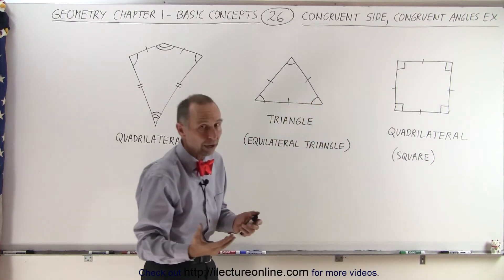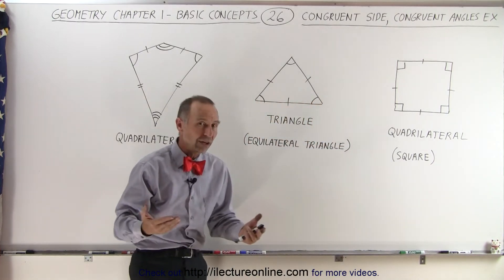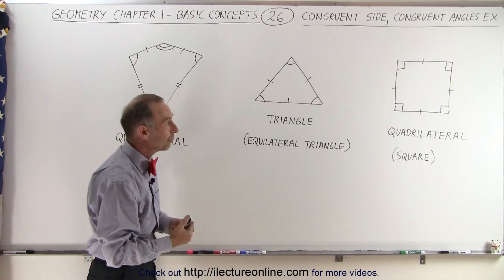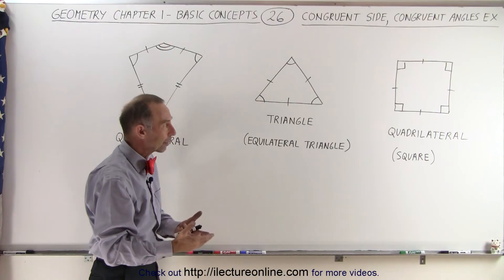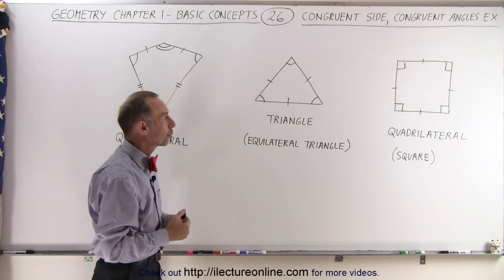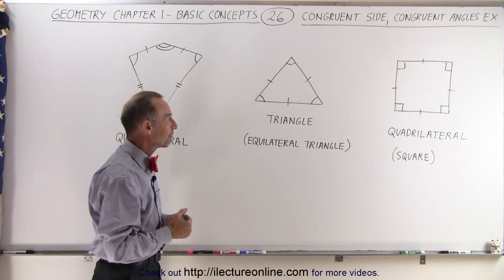By definition, a square has four congruent sides and four right angles, or four congruent angles.